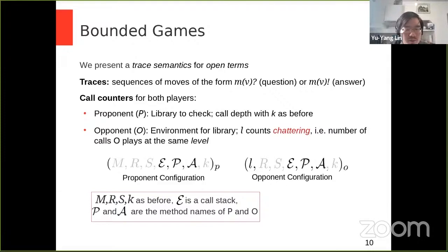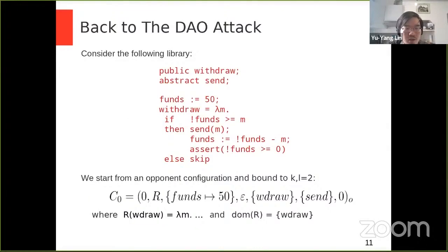For libraries, we define a game semantics in operational form, which is a trace semantics that involves game moves, specifically questions written using these question marks and answers, which are written using these exclamation marks. Since games can typically go on forever because the environment is allowed to keep on calling, we bound the games using a counter L. L counts what we call chattering, which is intuitively the size of the term being modeled by the opponent. The reason why the proponent does not need to be bounded the same way is that we expect terms to always be of finite size.